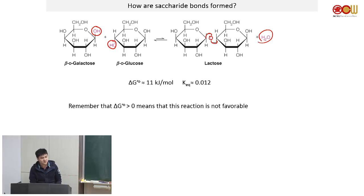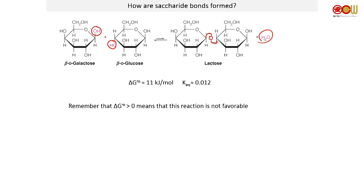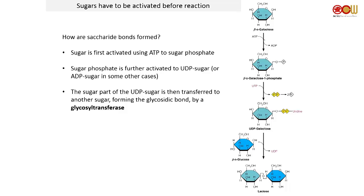The question is: we're building trees and polysaccharides naturally — how do cells do it? We'll come back to this in Biochemistry II next semester. But briefly, what you have to do is first activate your glucose, or your sugar in general.